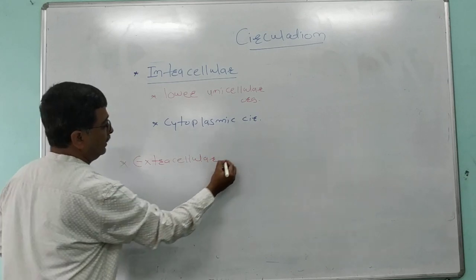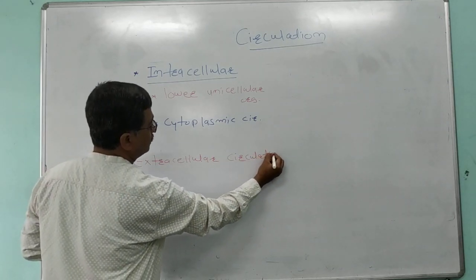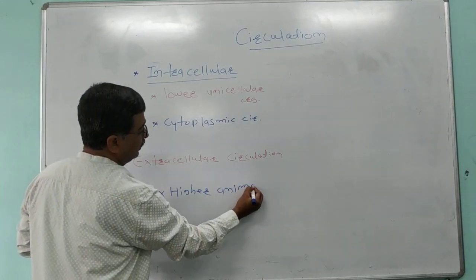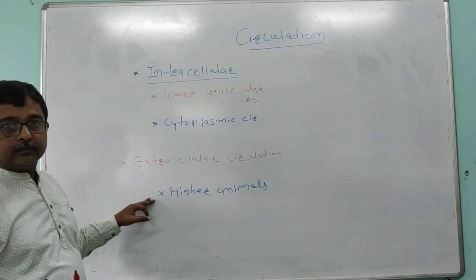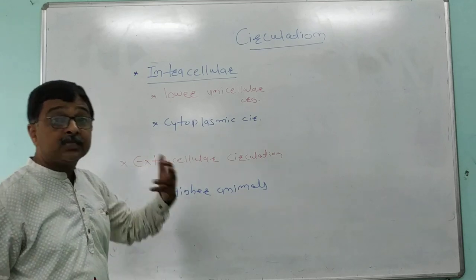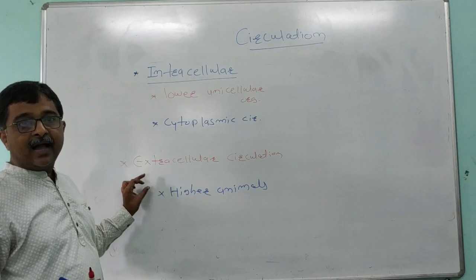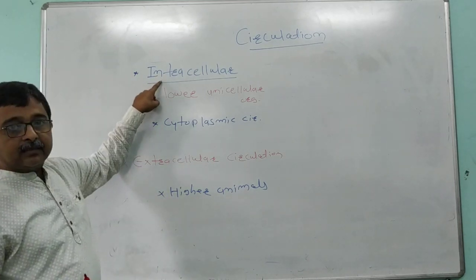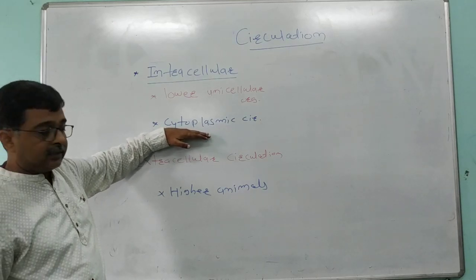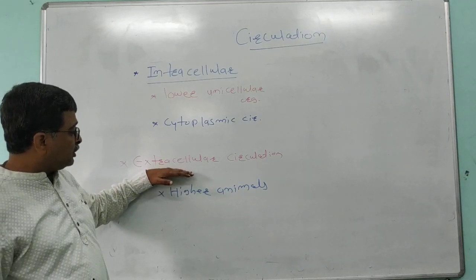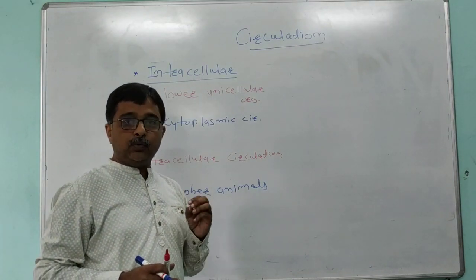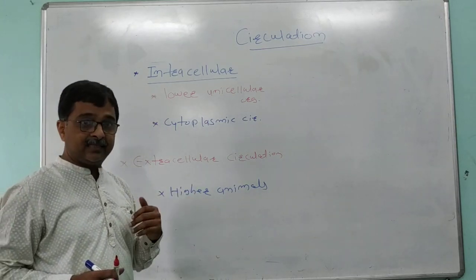The second type is extracellular circulation, which is found in higher animals. In human beings, there is extracellular circulation — meaning circulation takes place outside the cell, between the blood capillaries and the cell. In intracellular circulation, the process takes place inside the cell and cytoplasm is responsible, whereas in extracellular circulation it takes place outside the cell.